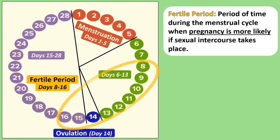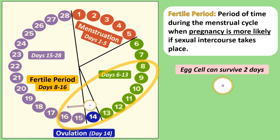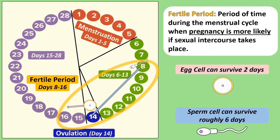For a couple trying for a baby, the fertile period is a time during the menstrual cycle where sexual intercourse is more likely to result in a successful pregnancy. The fertile period lasts from days 8–16. An egg cell is released on day 14 and has a lifespan of 2 days. A sperm cell can survive roughly 6 days, so if intercourse took place on day 8, sperm cells could still be present when the egg cell is released 6 days later.